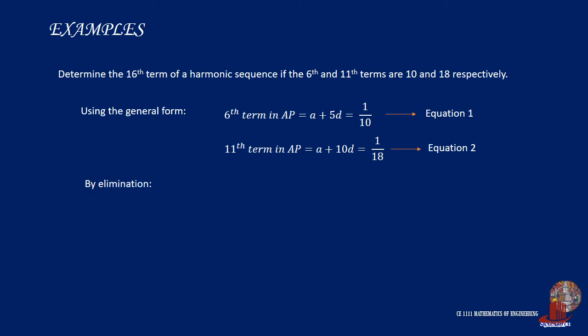By the method of elimination, we can eliminate a when we subtract equation 2 from equation 1. Solving further, we are able to determine d as negative 2 over 225. By plugging the value for the common difference to either equation 1 or 2, we would be able to get the value for a, which would turn out to be 13 out of 90.